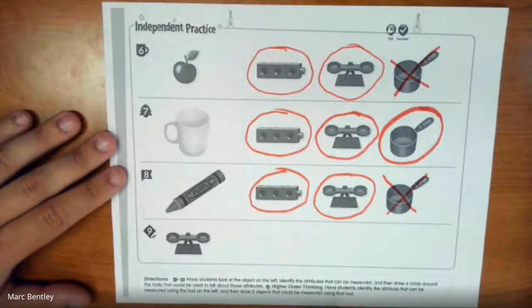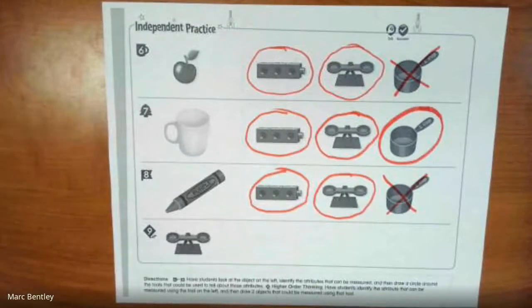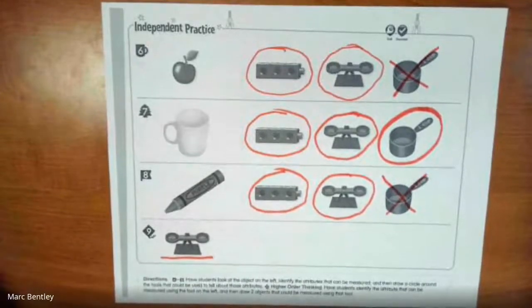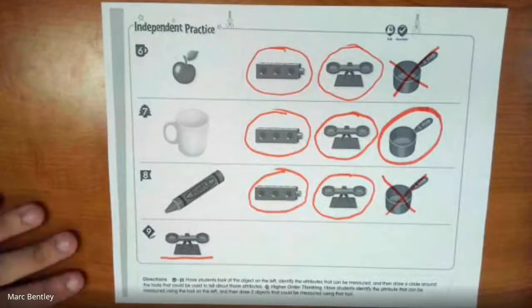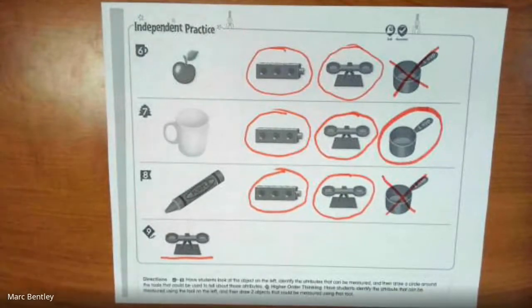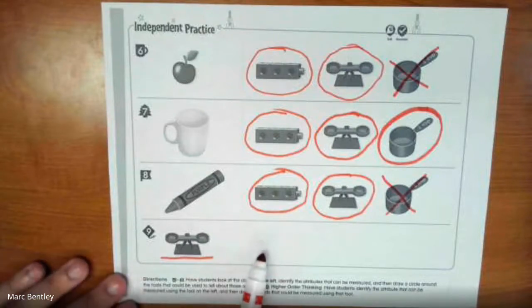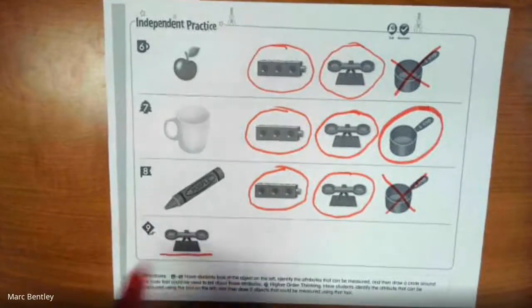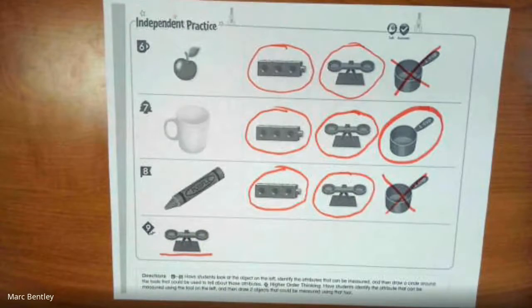Number nine says have students identify the attribute that could be measured using the tool on the left. So what is this tool right here? If you said a measuring scale, you are correct. But what does a measuring scale weigh? Well, it tells us an object's weight. So what I want you to do is draw two objects in this space here that could be measured with these scales by weight. All right kindergarten, great job today and I will see you next time.